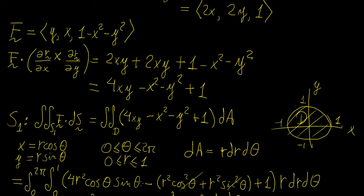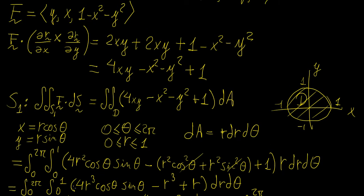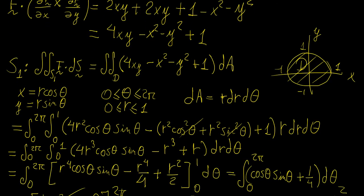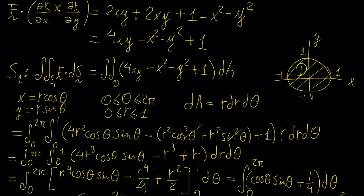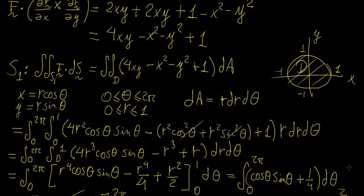We write the integral in terms of polar coordinates, making substitutions. For the quantity involving x squared plus y squared, cosine squared plus sine squared equals 1, and everything is multiplied by r. Multiplying through by r to rearrange, we perform the integration with respect to r: r to the 4th over 4 gives terms that simplify, then minus r to the 4th over 4, plus r squared over 2. Evaluating at r = 1 gives 1 minus 1/4 plus 1/2, and 1/2 minus 1/4 equals 1/4.